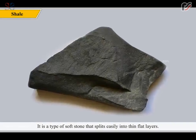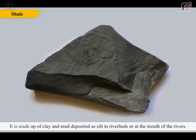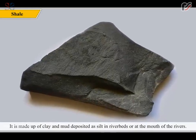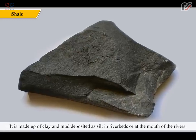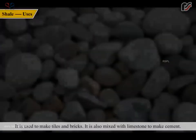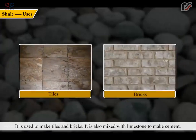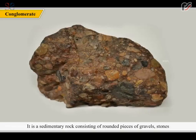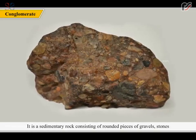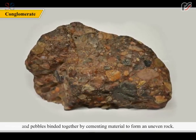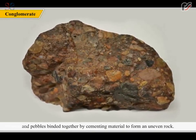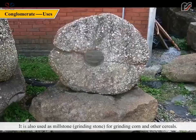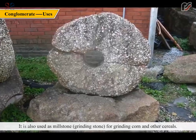Shale is a type of soft stone that splits easily into thin flat layers. It is made up of clay and mud deposited as silt in river beds or at the mouth of rivers. Shale is grey in colour. It is used to make tiles and bricks, and is also mixed with limestone to make cement. Conglomerate is a sedimentary rock consisting of rounded pieces of gravels, stones and pebbles bound together by cementing material. It can be used for jewellery and decoration.